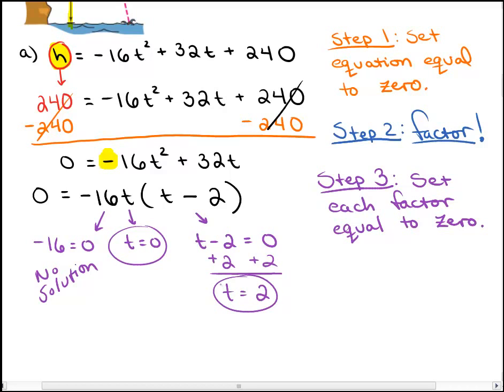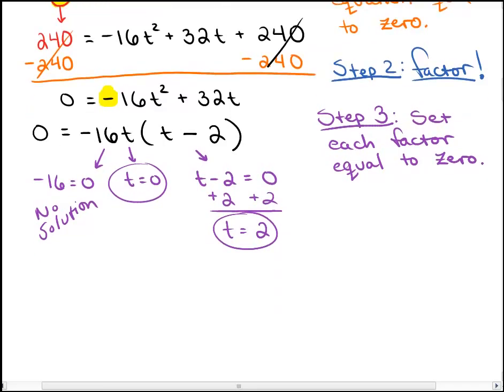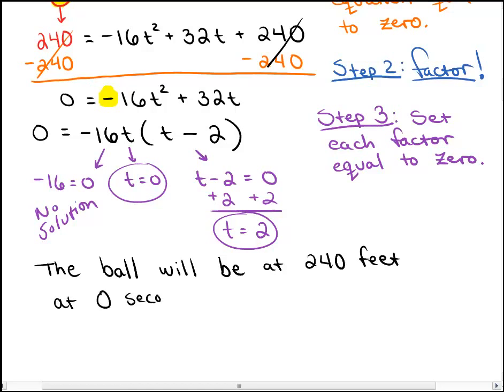I won't give full credit if you just write t equals zero and t equals 2 without explaining what that means or what units. It's a word problem — give me a sentence. The ball will be at 240 feet at zero seconds and at 2 seconds. At zero seconds it's right when the ball leaves the child's hand, and after going up and coming back down, after 2 seconds it will be at 240 feet again.